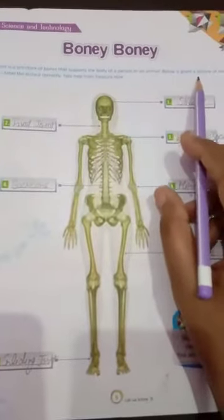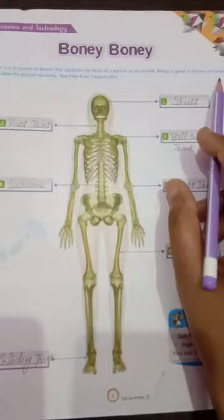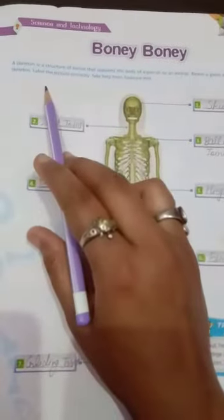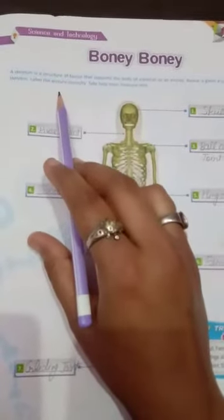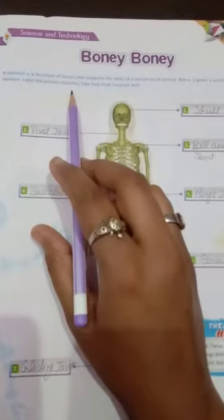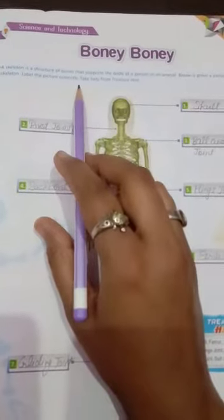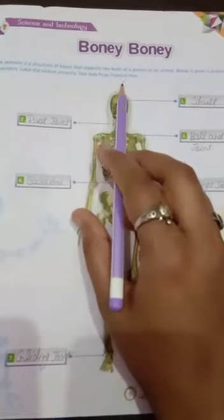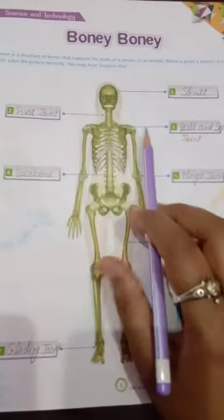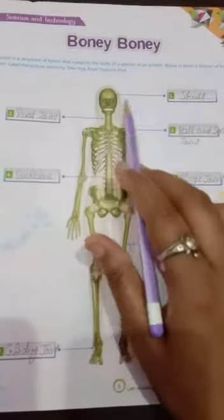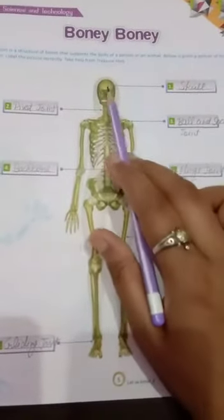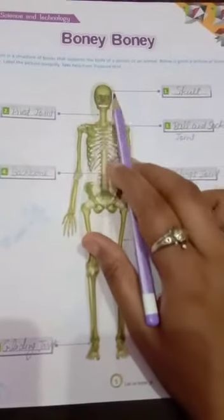Below is given a picture of the human skeleton. Label the picture correctly. Take help from the treasure hunt. First: Skull — this part is the skull.